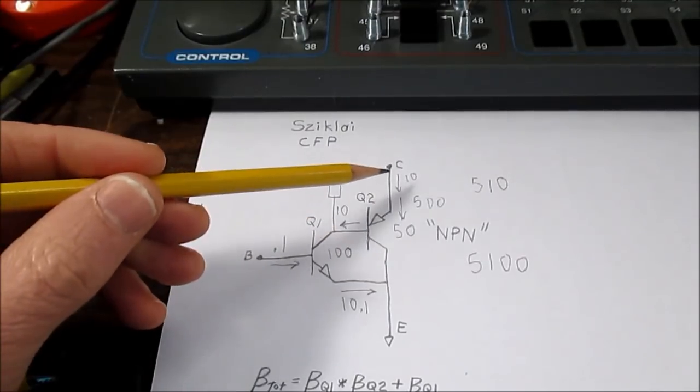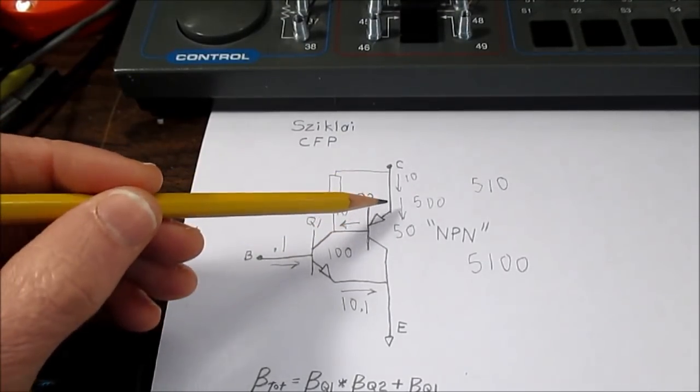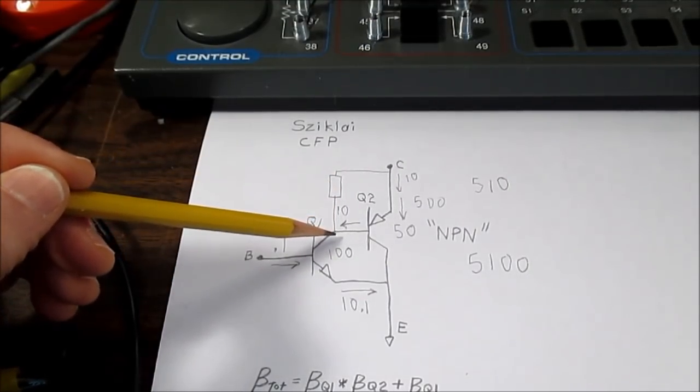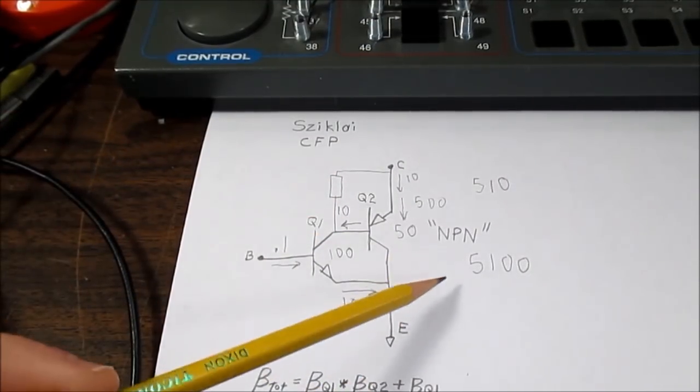Well, because we are shunting current away, which would normally flow through this junction, this does reduce the gain of the circuit. But again, just like the Darlington circuit,